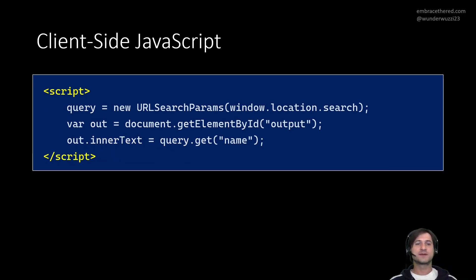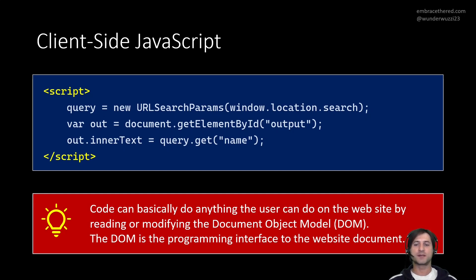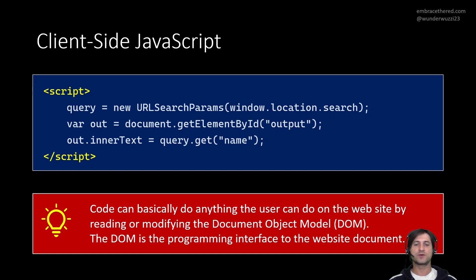The third concept is JavaScript execution on the client side. It starts with the script HTML element tag, and then it's arbitrary code that is run by the browser. It can interact with the web page via the Document Object Model — the DOM. The DOM is basically the programming interface that JavaScript uses to interact with the HTML document: JavaScript can read from the document, update elements, and so on. Importantly, code can basically do everything that the user in front of the computer can do with the web application — it can modify or read any data from that particular web application.